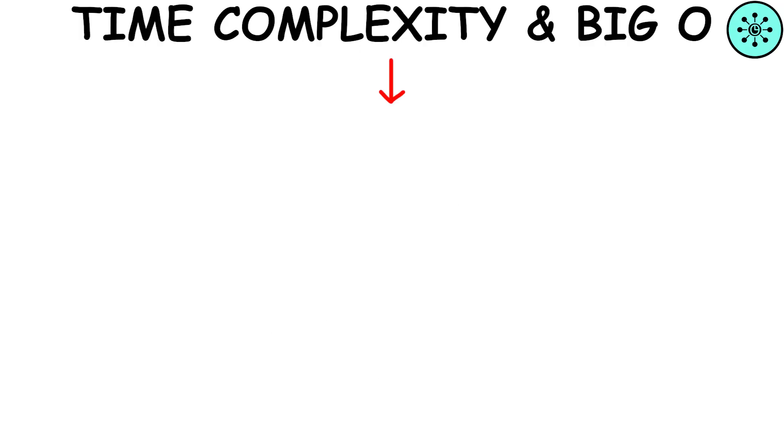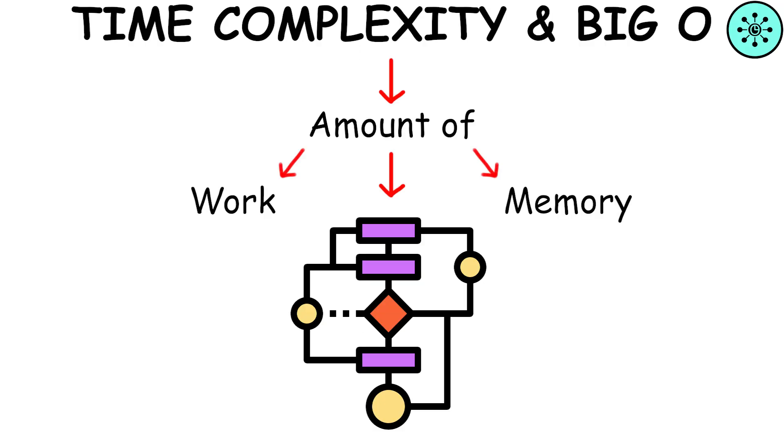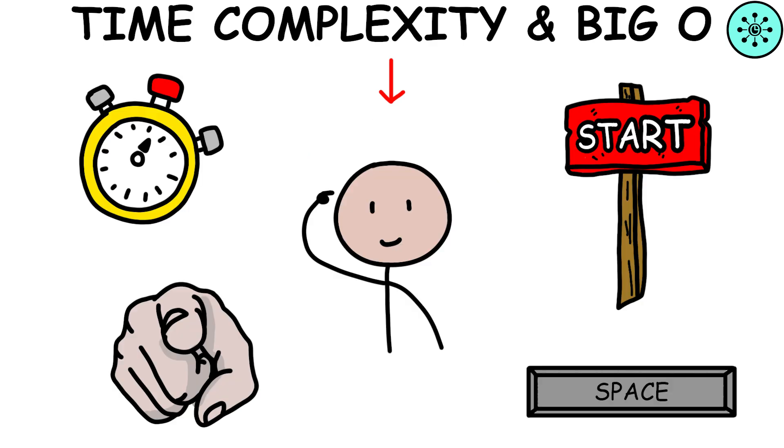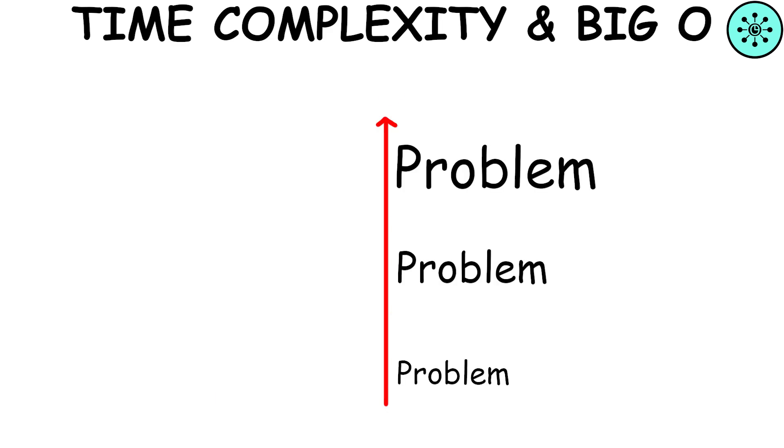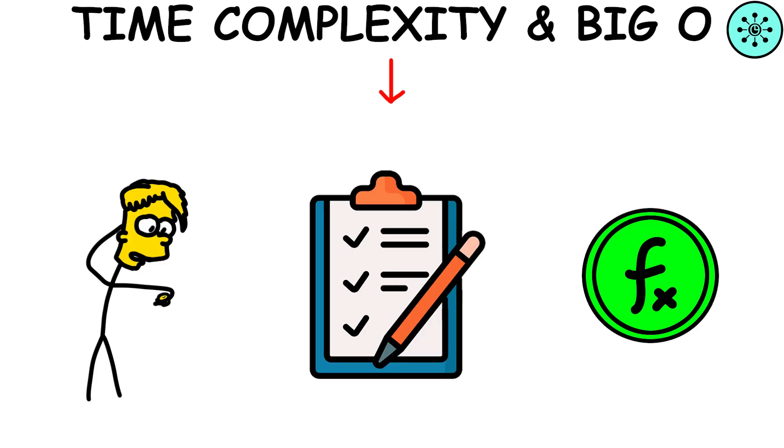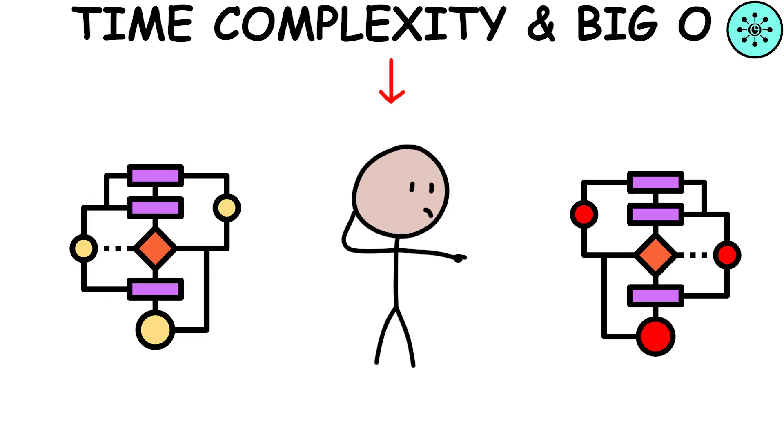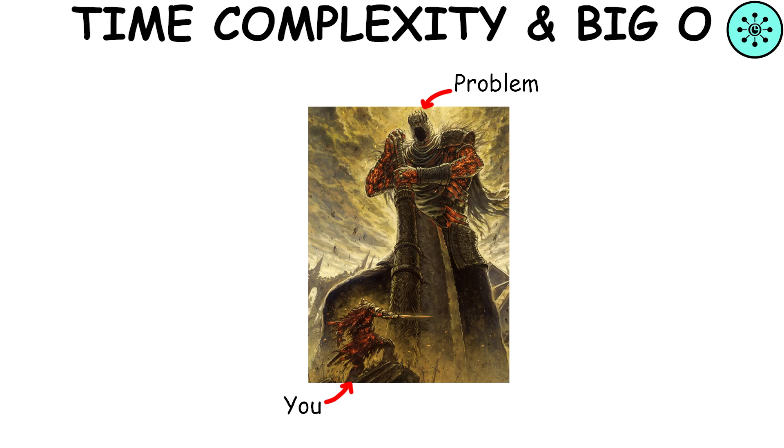Time and space complexity are like gauges that tell us how much work and memory an algorithm needs to do its job. It's like knowing how much time and space you'll need before starting a task. Big O notation is like a shorthand way of describing how fast an algorithm grows as the size of the problem it solves gets bigger. By using Big O notation, we can quickly compare different algorithms and see which one is the most efficient, especially when we're dealing with really big problems.